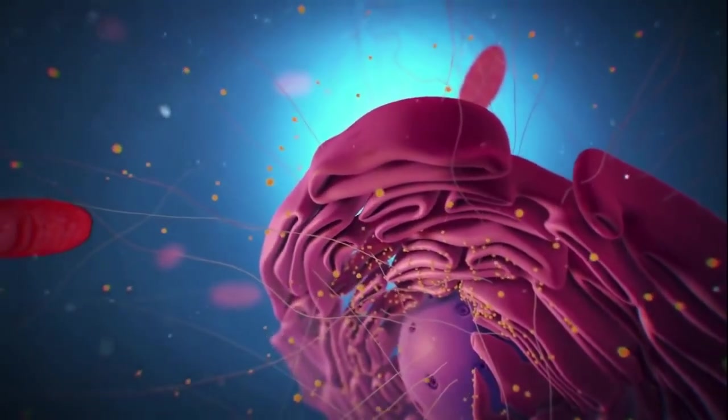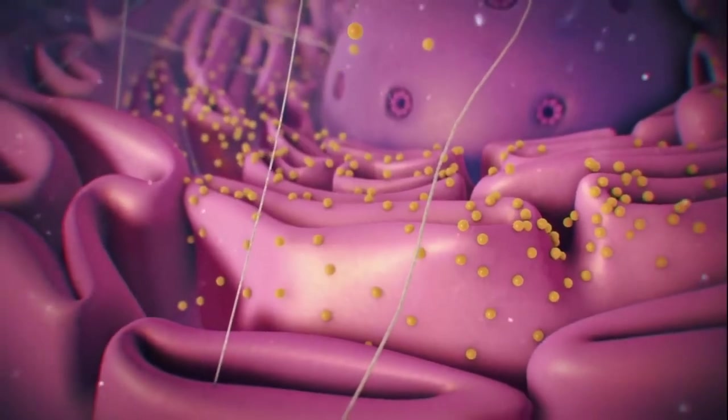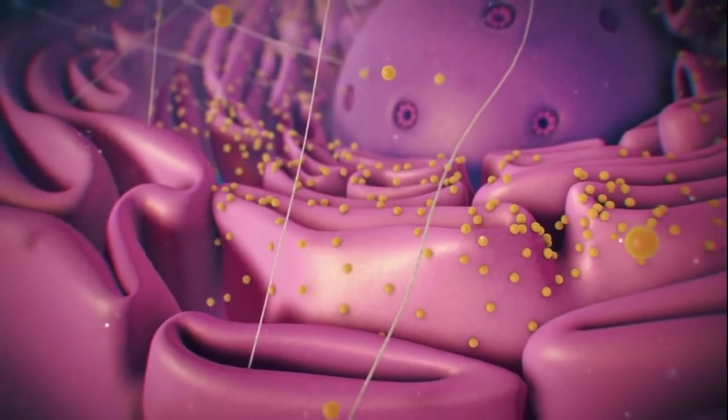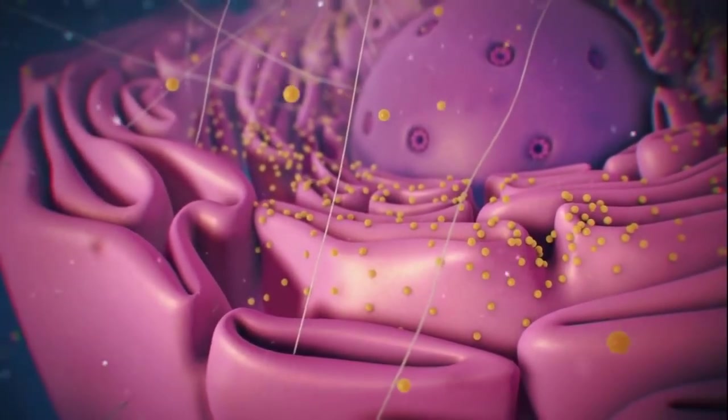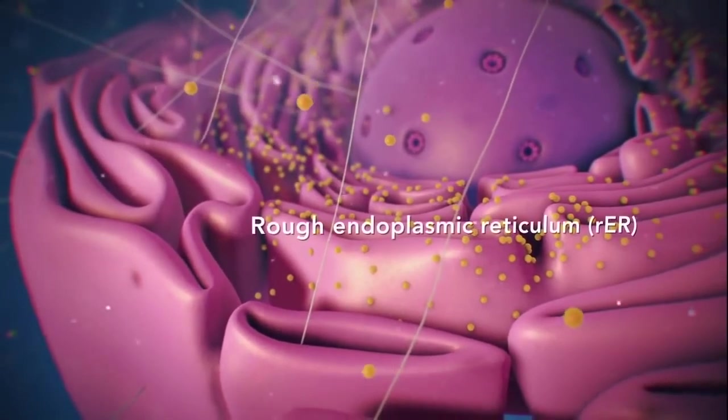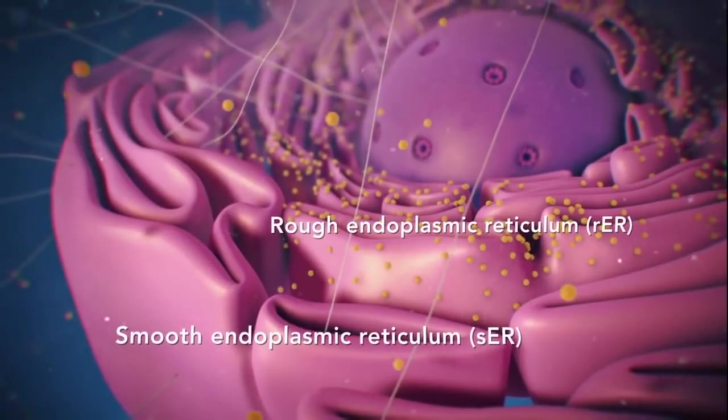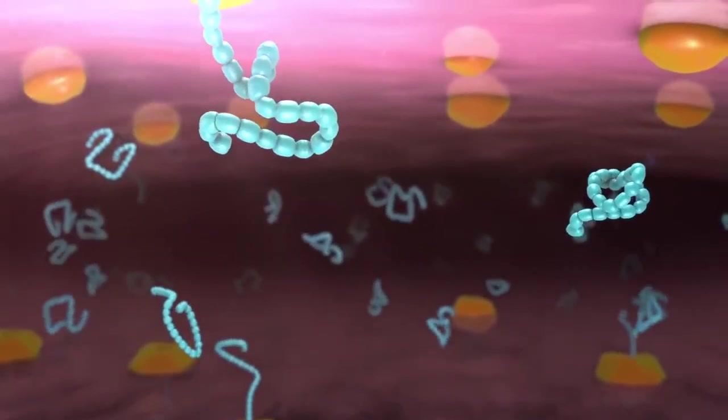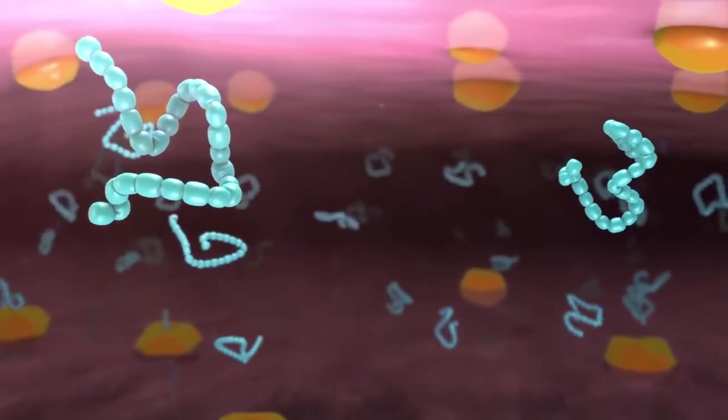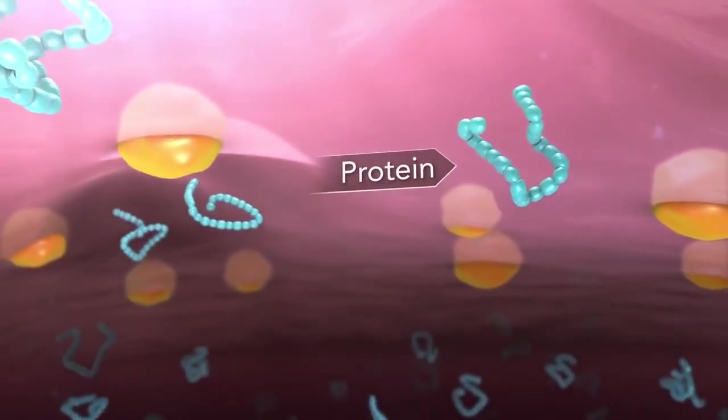Ribosomes may wander freely within the cytoplasm or attach to the endoplasmic reticulum, sometimes abbreviated as ER. There are two types of ER. Rough ER has ribosomes attached to it, and smooth ER doesn't have ribosomes attached to it. The endoplasmic reticulum is a membrane-enclosed passageway for transporting materials, such as the proteins synthesized by ribosomes.